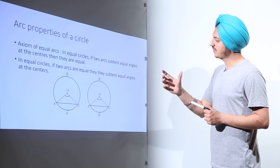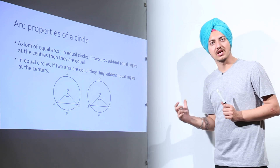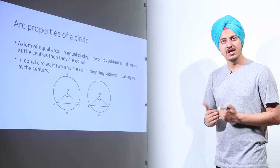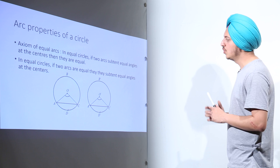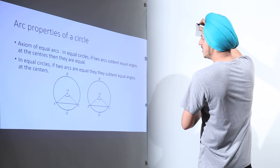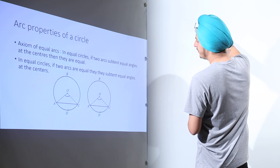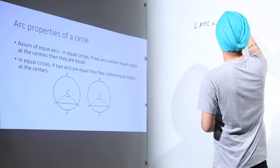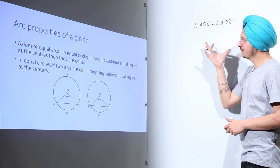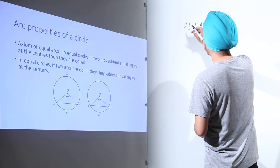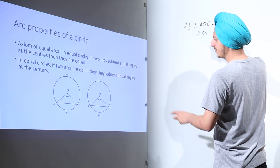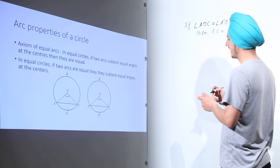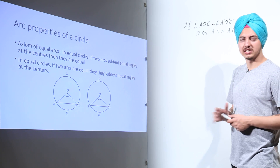I'll write down what it says. First of all, remember that the two circles are equal — their radii are equal. So in equal circles, if two arcs subtend equal angles, that means angle AOC will be equal to angle A-dash O-dash C-dash. This is given; if this is true, then AC is equal to A-dash C-dash, and it is also given that the two circles are equal.